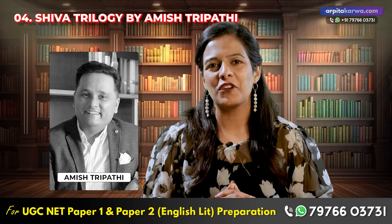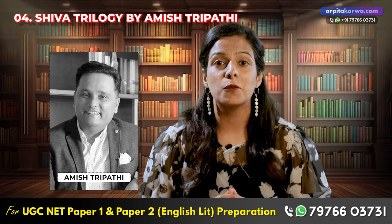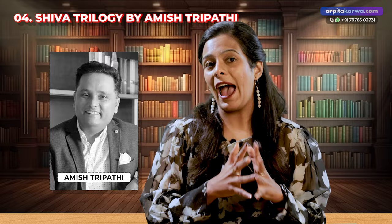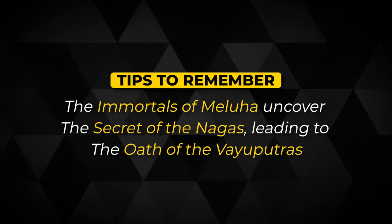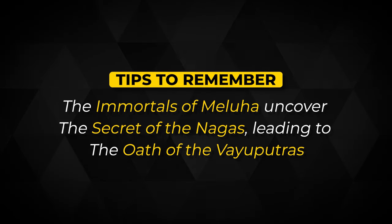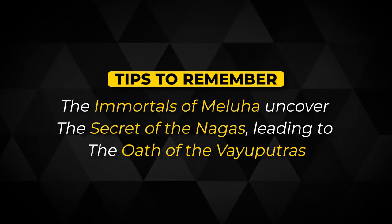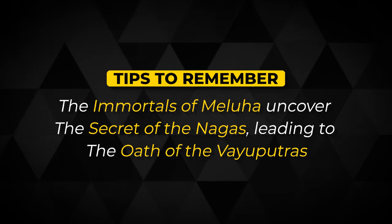Throughout the trilogy, Amish Tripathi weaves together elements of mythology, philosophy, and political intrigue, creating a rich tapestry of characters and cultures inspired by Indian history and legend — with many similarities to the Mahabharata and Ramayana. The best way to remember the three titles is by the story: Immortals of Meluha uncover the Secret of the Nagas, leading to the Oath of the Vayuputras. If you can remember that line, you are good to go.